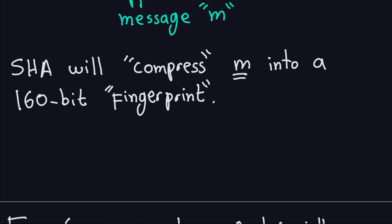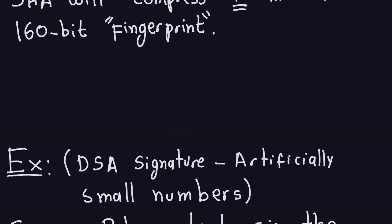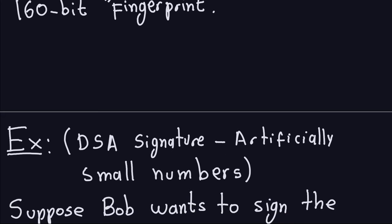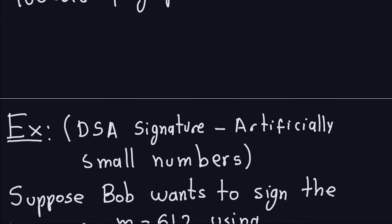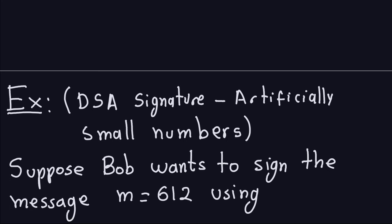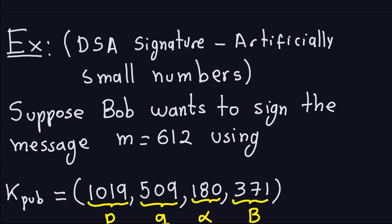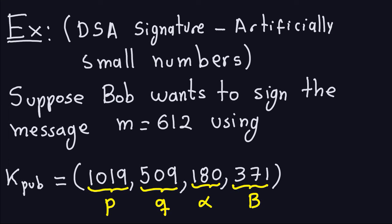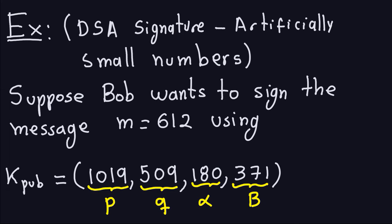Now I'm going to give you an example with small numbers. I'm calling this an artificial example because this is not what you would do in real life — I'm artificially using small numbers just to help you understand what we're doing with this signature algorithm.